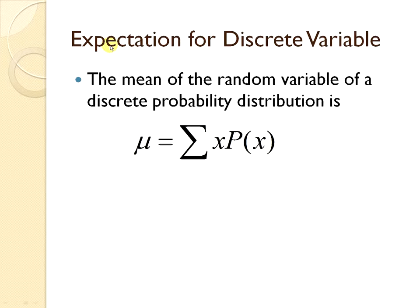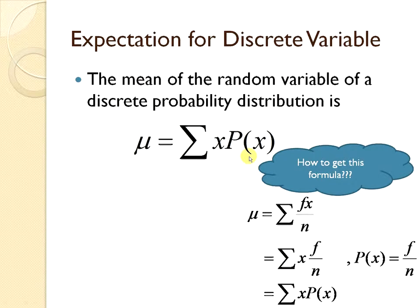We know that the expectation or the mean of a discrete probability distribution is mu equal to summation of x·P(x). How do we get this formula? We know that mu is equal to summation of f(x) over n, and we take out the f(x), then we have x times f over n. P(x) is actually f over n — the probability is the frequency divided by the total of the sample space. So we have the summation of x·P(x).